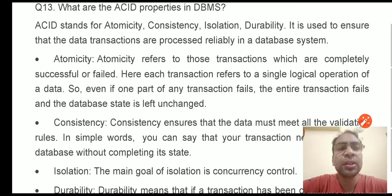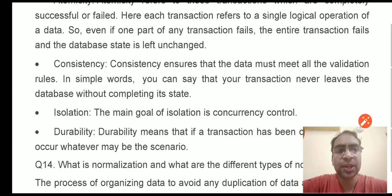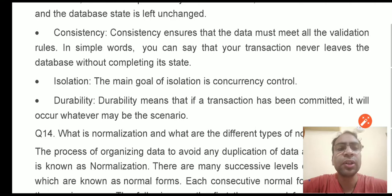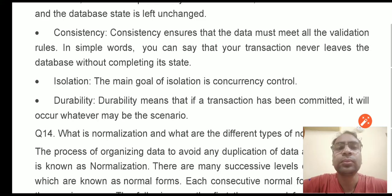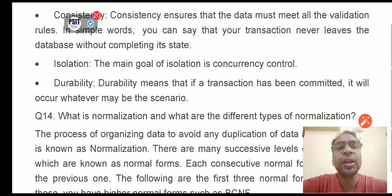Atomicity means the transaction is either completely executed or not at all. Consistency means after the completion of a transaction, the database has to be in a consistent state. Isolation means that during concurrent or simultaneous execution of transactions, no two transactions interfere with each other — each transaction should be executed in an isolated manner. Durability means that if the transaction is committed, then whatever changes are made by the transaction should be permanent in the database.